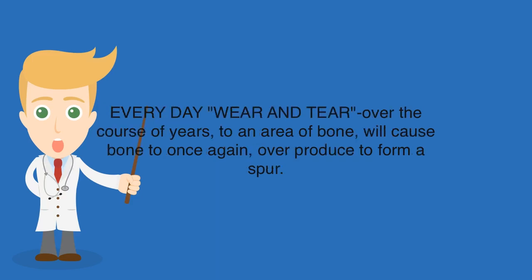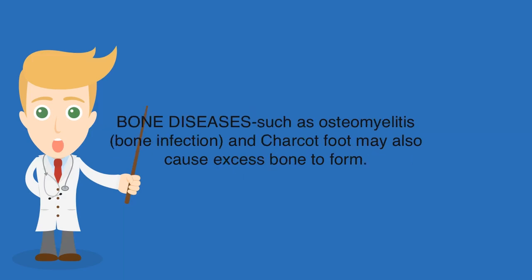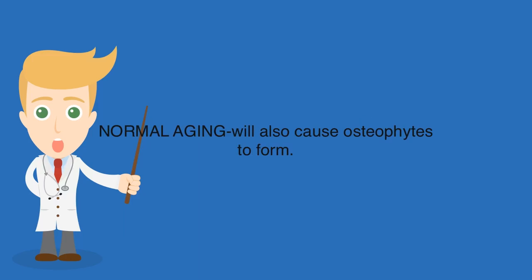Every day wear and tear, over the course of years, to an area of bone will cause bone to once again overproduce to form a spur. Bone diseases such as osteomyelitis, bone infection, and Charcot foot may also cause excess bone to form. Normal aging will also cause osteophytes to form.